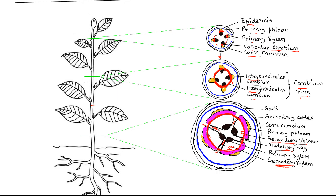Substances can move laterally along the parenchyma cells that make up the medullary rays. The secondary parenchyma is produced by the interfascicular cambium. In summary, secondary xylem and secondary phloem are formed from the intrafascicular cambium, while the interfascicular cambium gives rise to secondary parenchyma cells appearing as medullary rays.